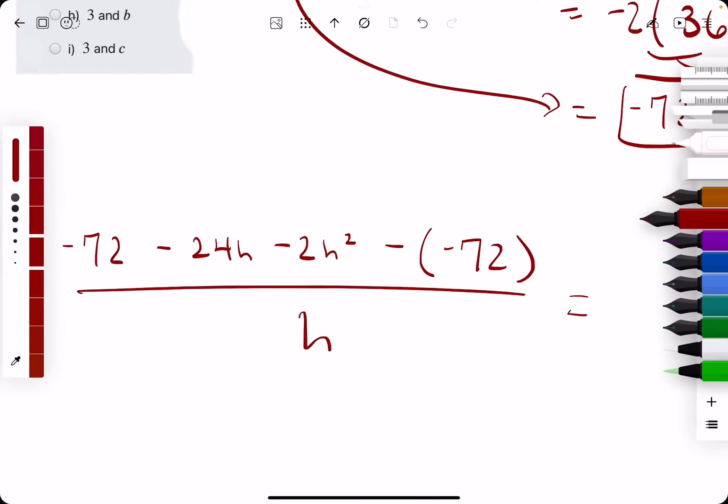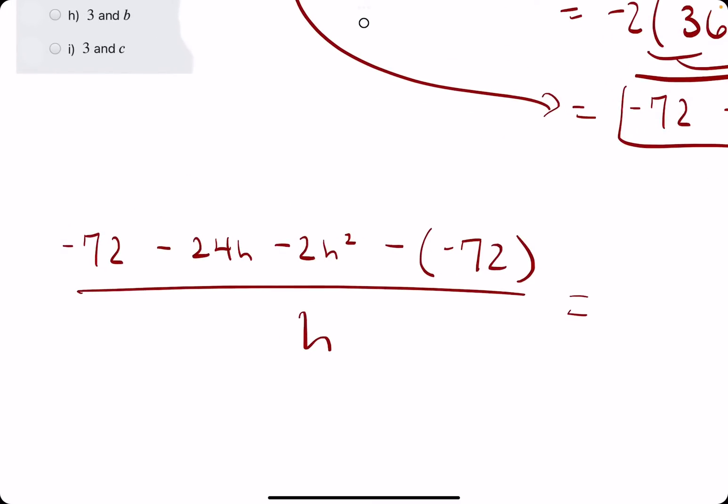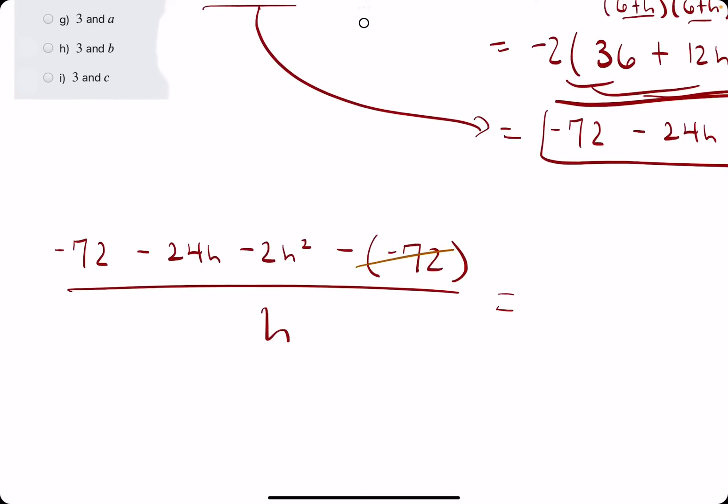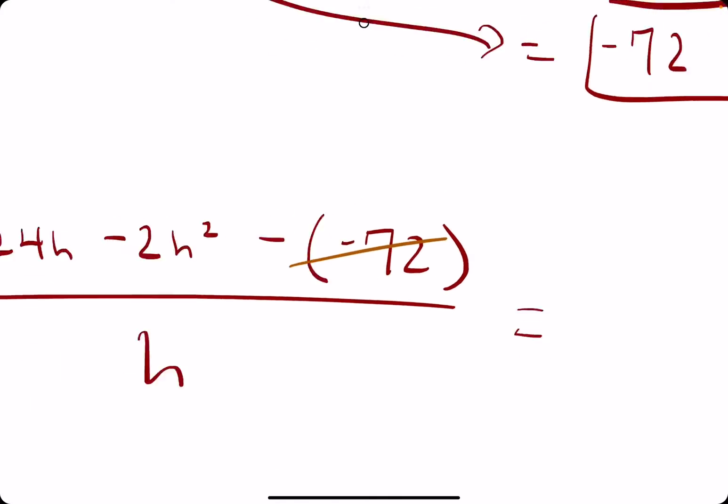So, like we saw in the other difference quotient problems, this f of a should always cancel. So negative 72 minus a negative 72, they cancel,